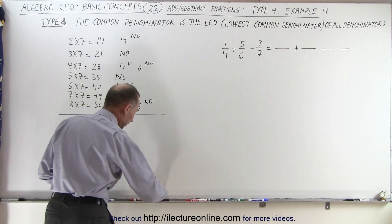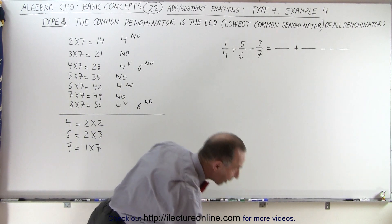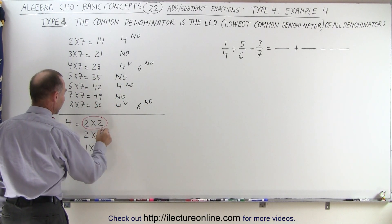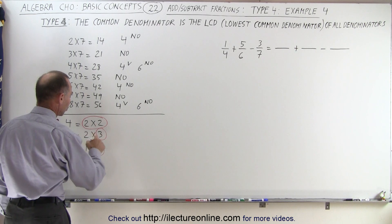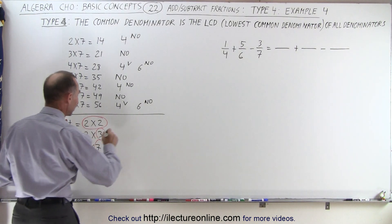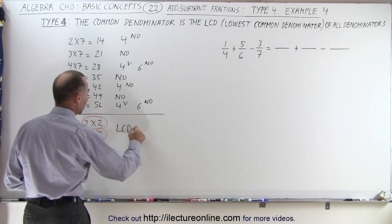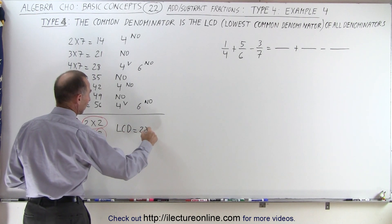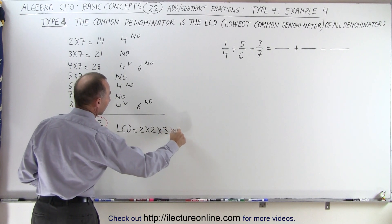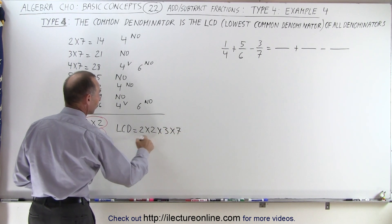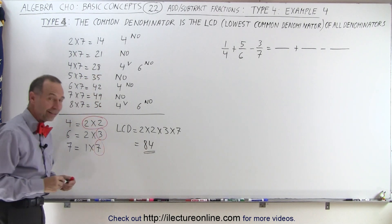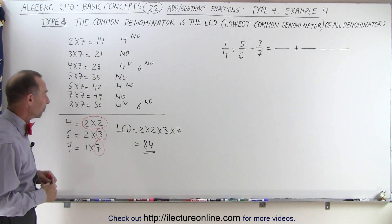All right, so the lowest common denominator is now going to be a product of 2 times 2 times 3 times 7. We circle every factor where it appears the most, and so then we can say that the LCD, the lowest common denominator, is equal to 2 times 2 times 3 times 7. 3 times 7 is 21, times 4 is equal to 84. See how much easier that method was versus this method.